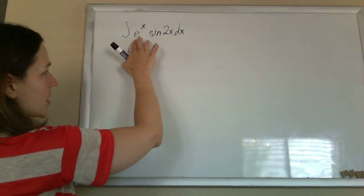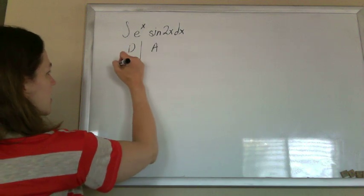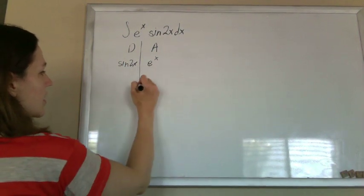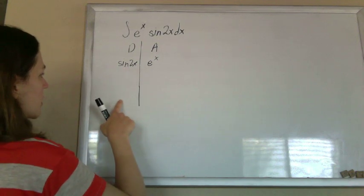I can choose either function to put here. I want to choose to differentiate the sine 2x and anti-differentiate the e to the x, just because I know my derivatives of these a little bit clearer.